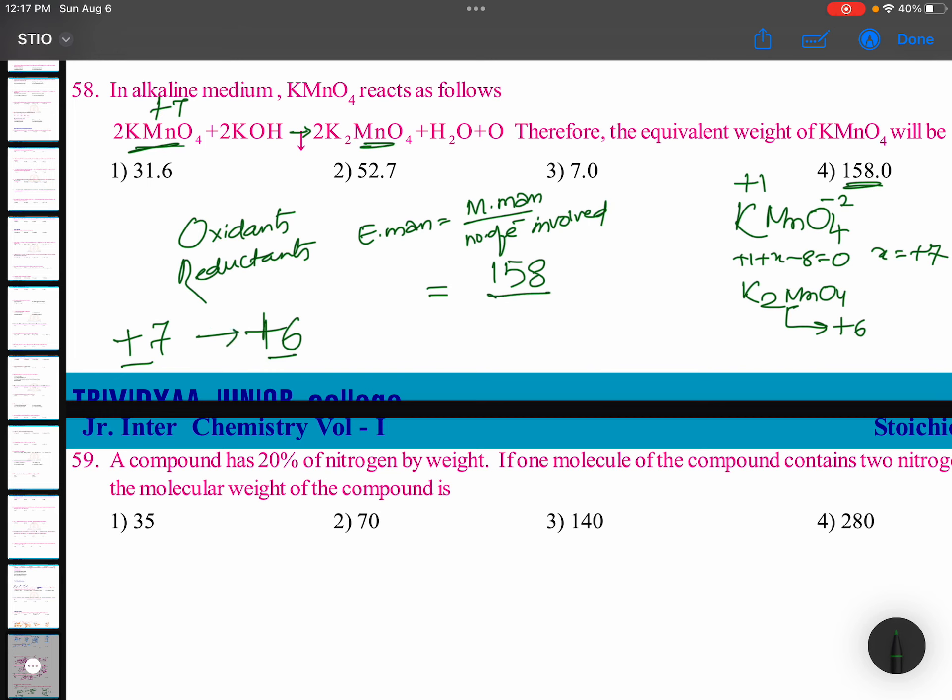When the change in oxidation state is 1, number of electrons involved is 1, so it is 158 only. Answer is 158.